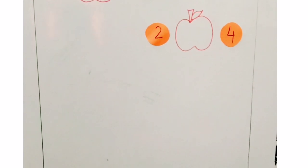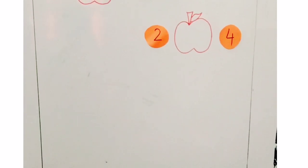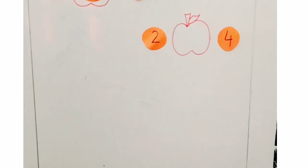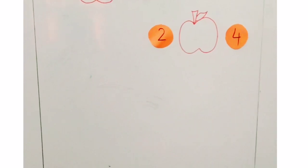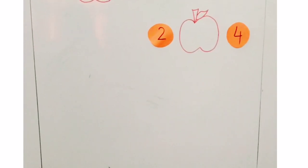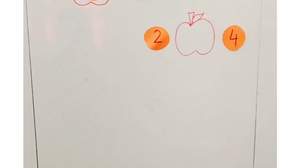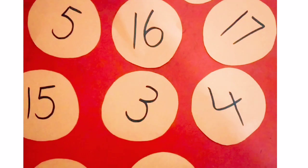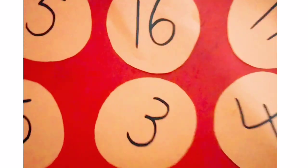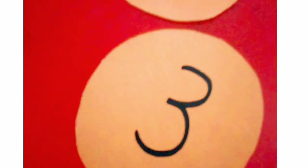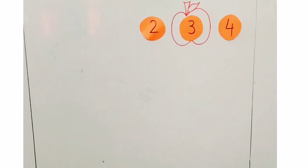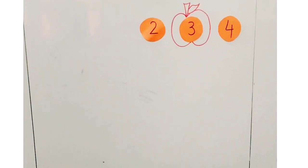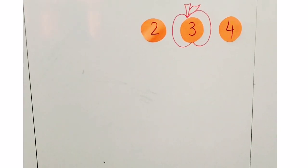Let's move to another task. What comes between number 2 and number 4? Number 3 comes between number 2 and number 4. Let's find out digit 3 in the flash cards, and place this number in its position. Now we complete this task.